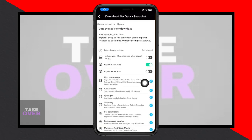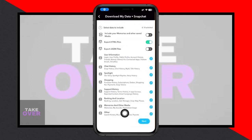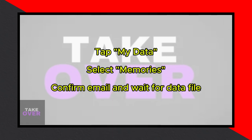To address any issues, tap on My Data and select Memories from your Snapchat account. You may need to log in and enter your password. Ensure that the Memories option is checked and proceed by selecting your preferred date range for downloading the memories.